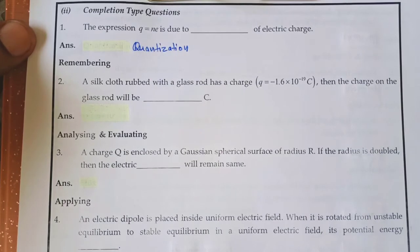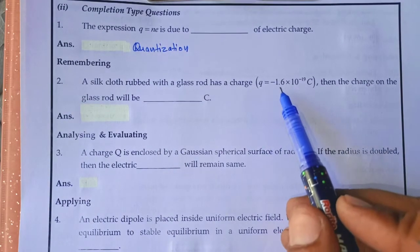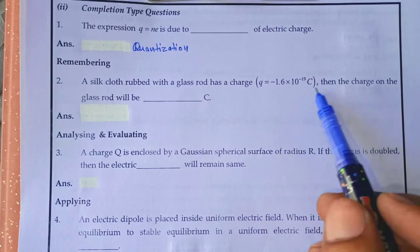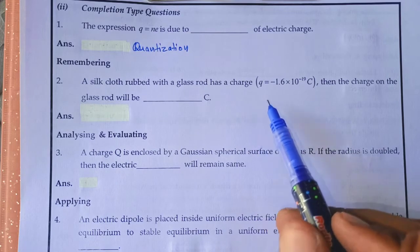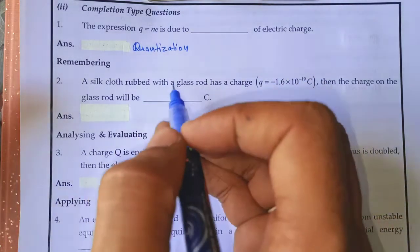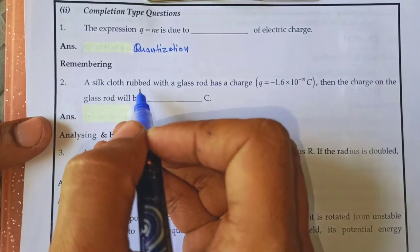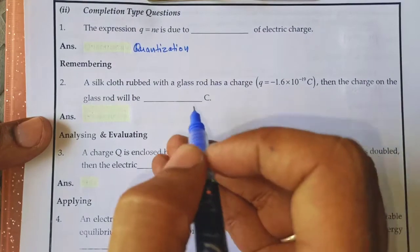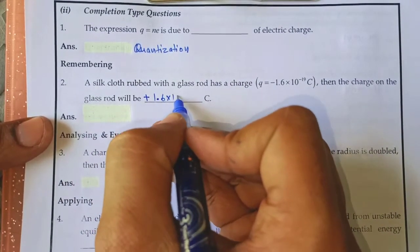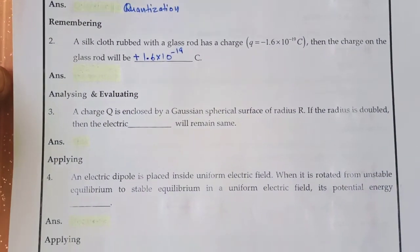A silk cloth rubbed with a glass rod has a charge of −1.6×10⁻¹⁹ coulombs on the silk cloth. The charge on the glass rod will be +1.6×10⁻¹⁹ coulombs — because rubbing produces equal and opposite charges on the two objects.